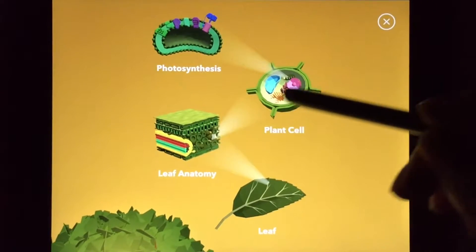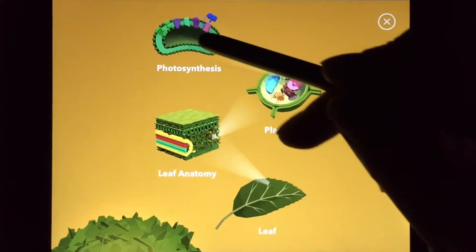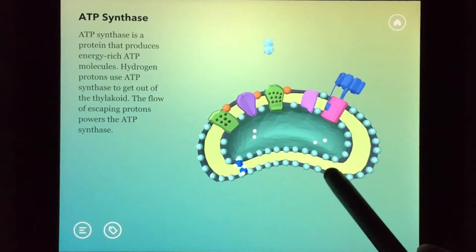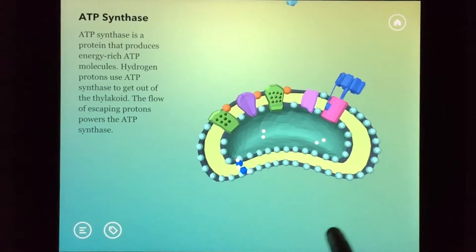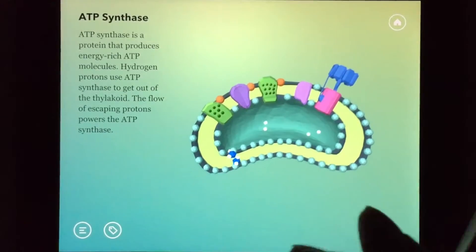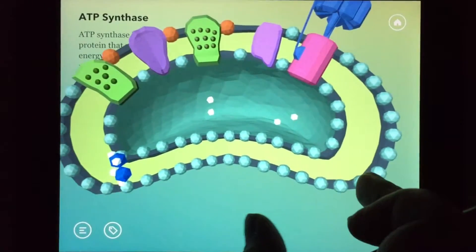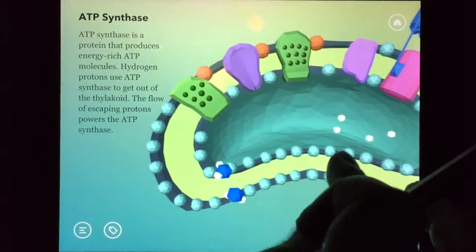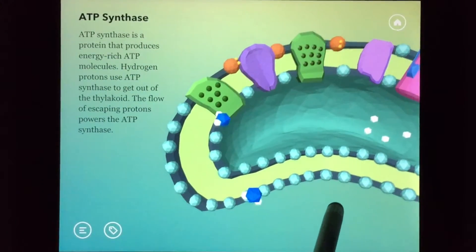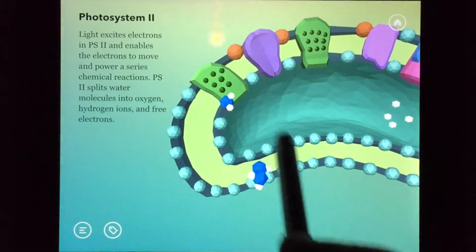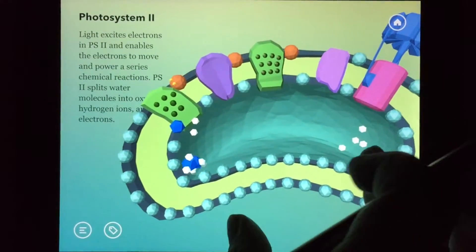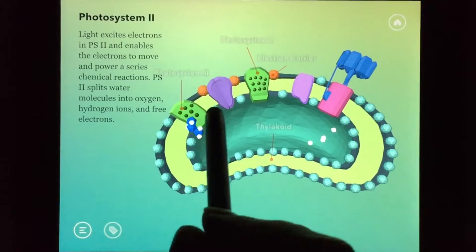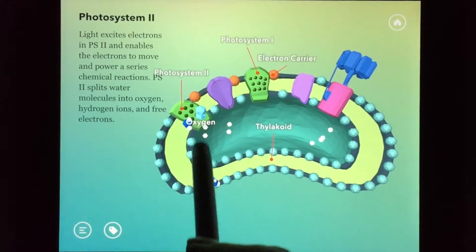The light-dependent reactions take place and happen on the thylakoid membranes. During light-dependent reactions sunlight is absorbed by two photosystems. A photosystem is a protein complex that acts as a reaction center for the chemical processes of photosynthesis. The photosystems are embedded in the thylakoid membrane and are called photosystem 2 and photosystem 1.